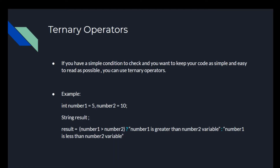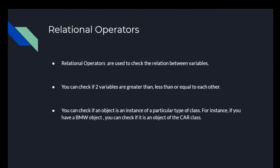Now we have our relational operators. These are used to check the relationship between variables — you can check if two variables are greater than, less than, or equal to each other. You can also check if an object is an instance of a particular class. For instance, if you have a BMW object, you can check if it's an object of the Car class.